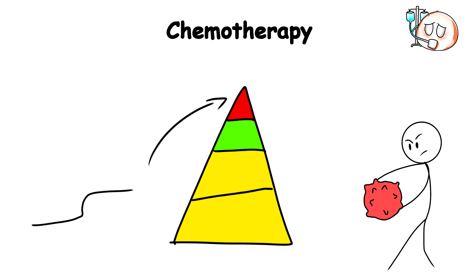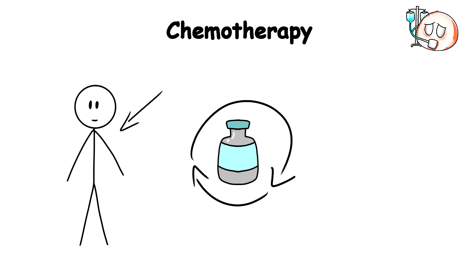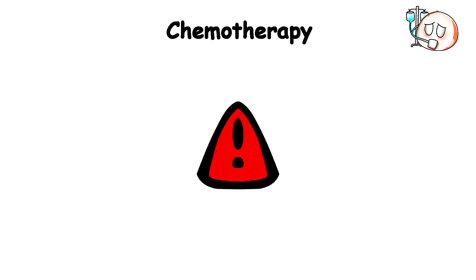By attacking cancer cells at these critical stages of rapid division, chemotherapy can curb or control the growth and spread of tumors. The drugs circulate through the body to reach cancer cells that may have traveled from the original tumor site. Though, as you can predict, it's not without its side effects.